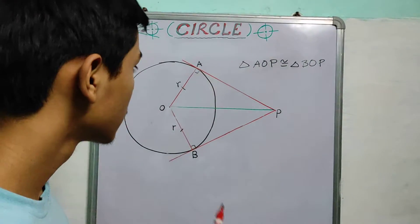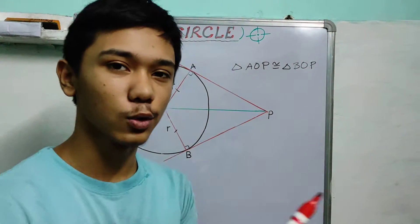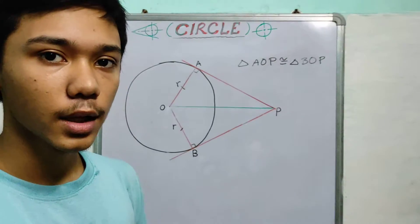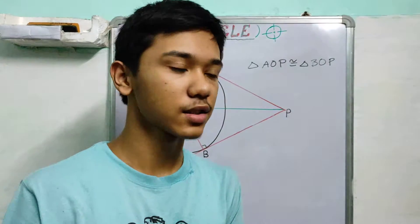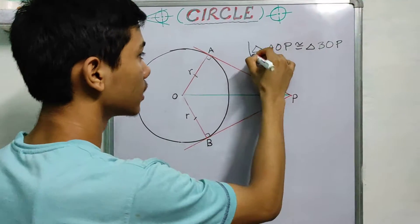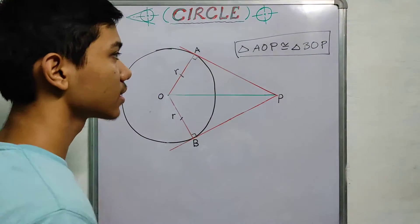Now, what I asked you to do is figure out as many properties as you can using this. So in this video, we will prove some very interesting theorems based on what we know: that these two triangles are congruent.